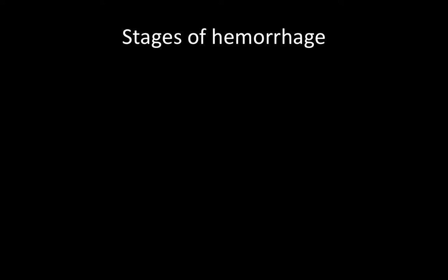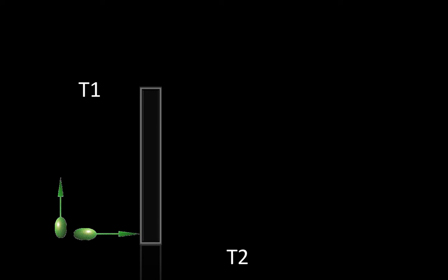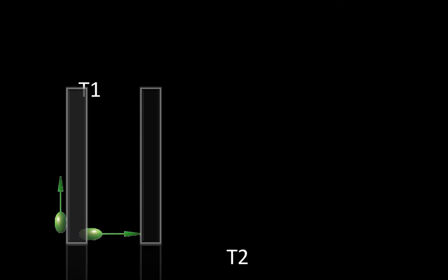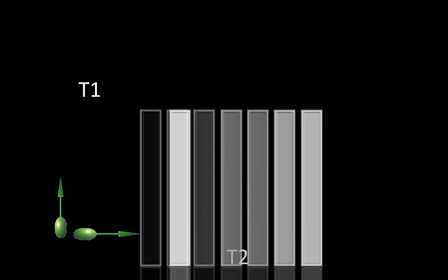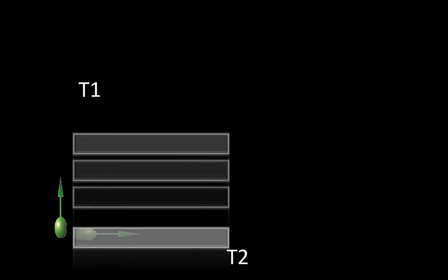Today we will discuss the MRI findings of different stages of hemorrhage. This graph shows the initial stage. The right arrow will show the T2 intensity and the upper arrow will show the T1 intensity. For T2 intensity, the nearest portion of the arrow will be hypointense, gradually becoming isointense and then hyperintense. For T1, it will similarly be hypointense near the arrow, gradually becoming isointense and then hyperintense.